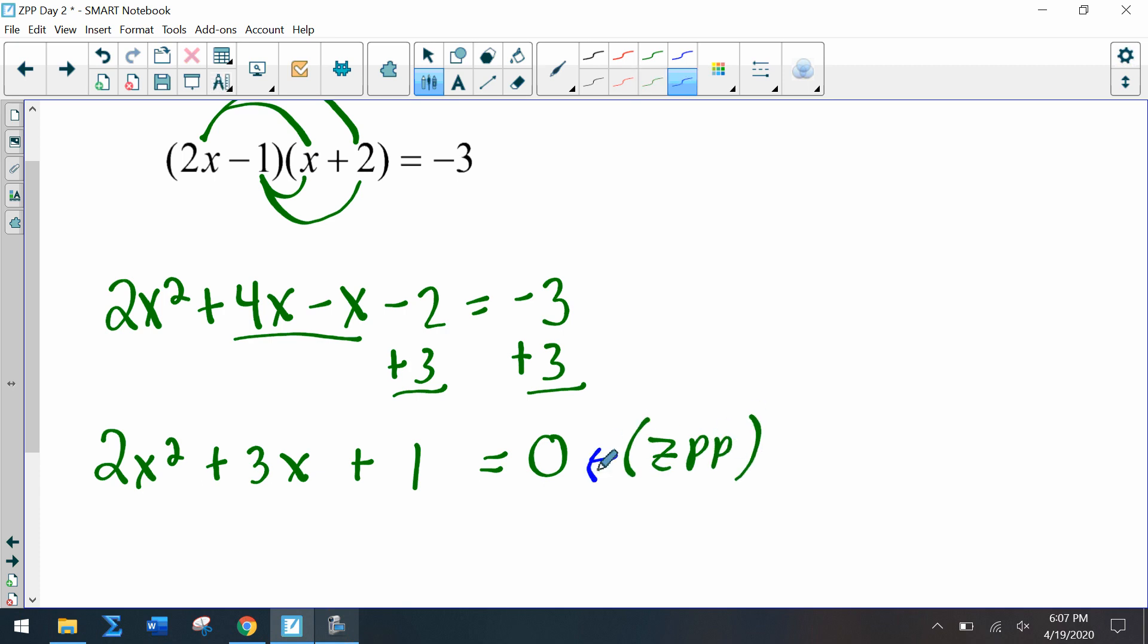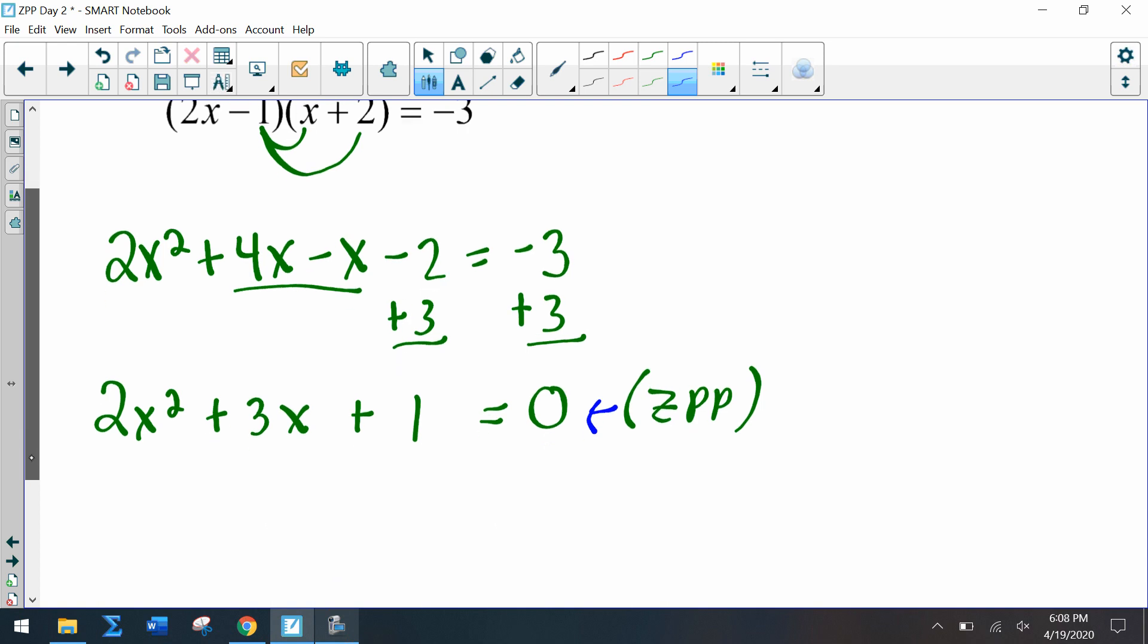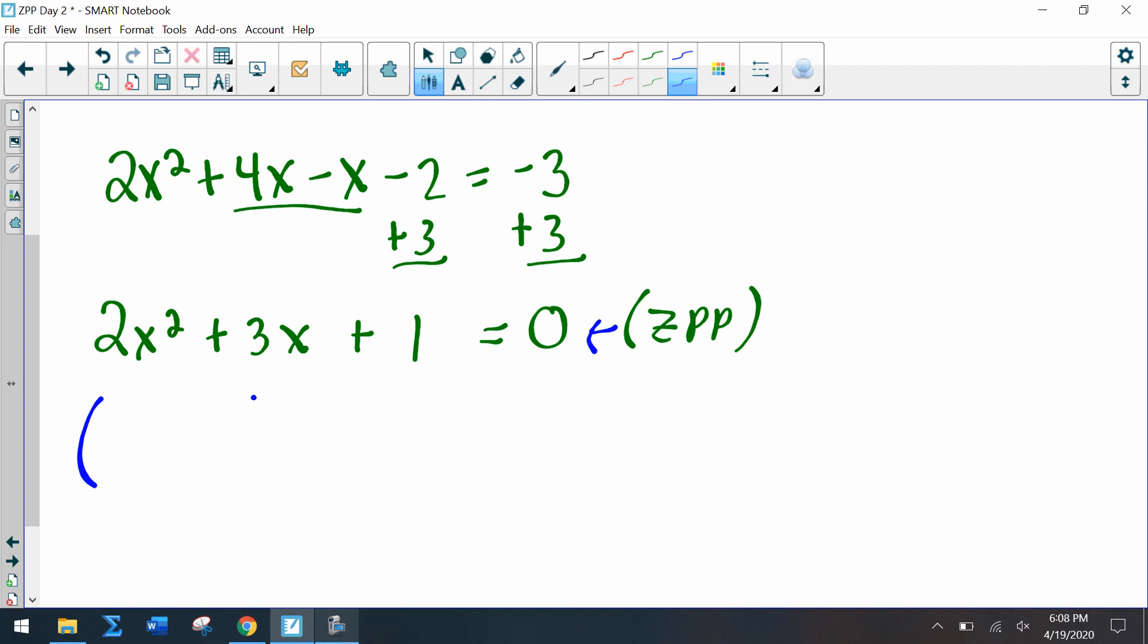Okay, this step, so you're going to have to sometimes multiply and simplify before you use the zero product property. And we can use the AC method if we want, or we can use our guess and check. Those end up being the factors, so I know x = -1/2 and x = -1.